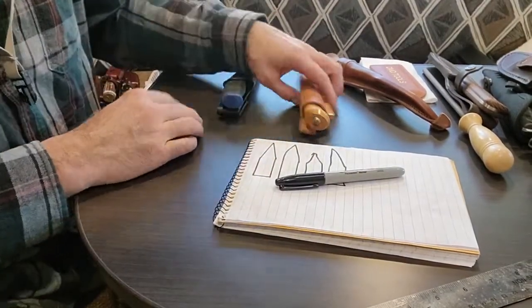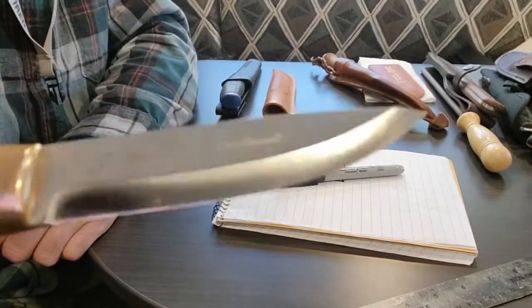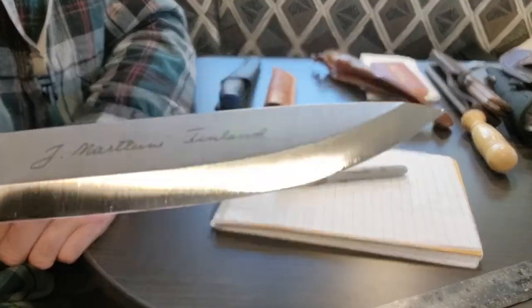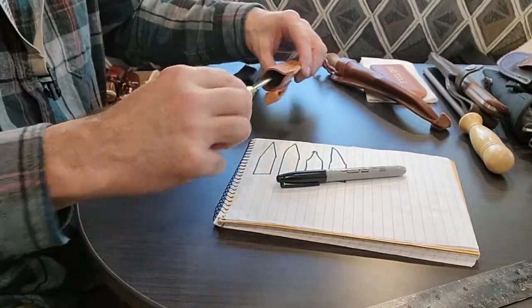Here's another Martini, the Rapala hunting knife. It's got a nice Scandi edge on that with just the slightest of a secondary bevel on that edge for strength. Works great.